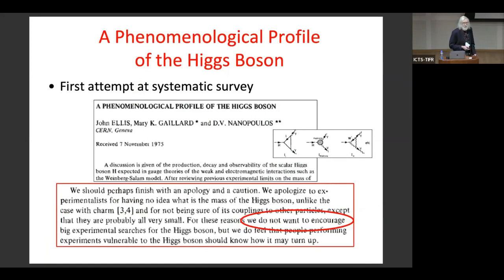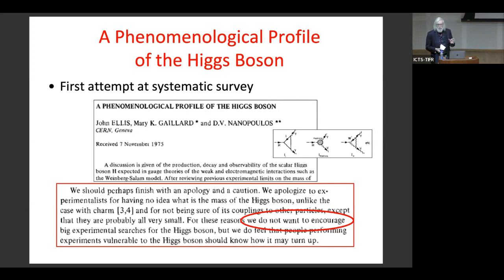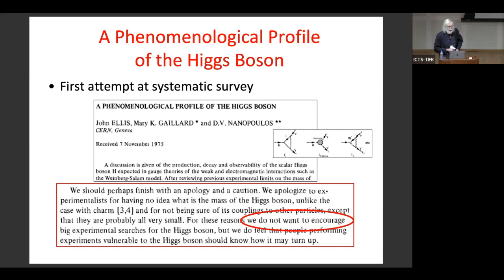I have to confess my long-standing involvement with the Higgs boson. Back in 1975, when the first real evidence for gauge theories started to emerge, many people were thinking about looking for the W boson or the Z boson, but it seemed to us that the key issue was the Higgs boson. We wrote a phenomenological profile paper at the end of 1975. In those days these ideas were regarded as extremely speculative, and we wrote the infamous sentence: 'We don't want to encourage big experimental searches for the Higgs boson.' Fortunately, our experimental colleagues ignored that rather poor advice.